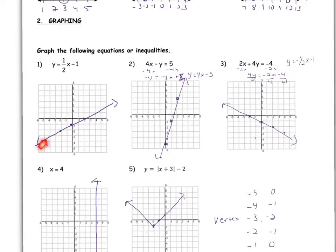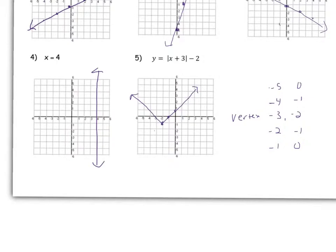Don't forget if the slope is going positive, it's going to be going uphill. If it is negative, it is going to be going downhill. An x equals equation is a vertical line going through the x-axis.